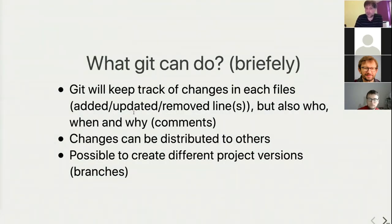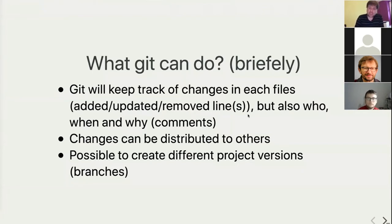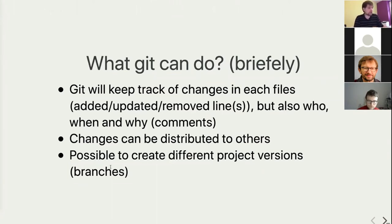Git will keep track of changes if you add, update, or remove lines in any kind of file. It will also tell you who made the modification, when, and why — because you need to put an explanation when you create a new version. The changes can be distributed to others; you can share them using c4science or GitHub. You can also create different versions of the same project — these are called branches.